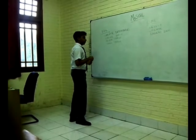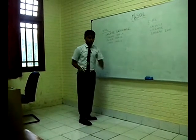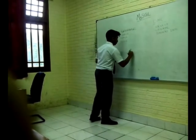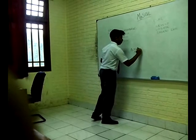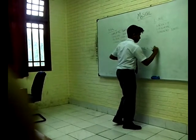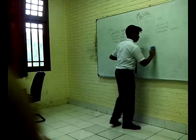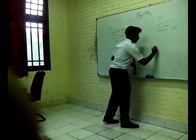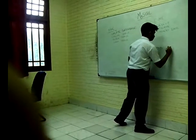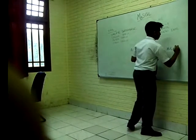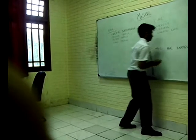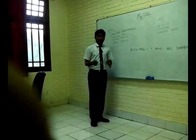Next is ALTER TABLE. Like we created a table with two columns and now I want to add a third one, we do it using ALTER TABLE. The syntax is: ALTER TABLE, the table name, then ADD, then the column name we want to add — for example 'age' as INTEGER — and then close with a semicolon. This will add another column to our table.